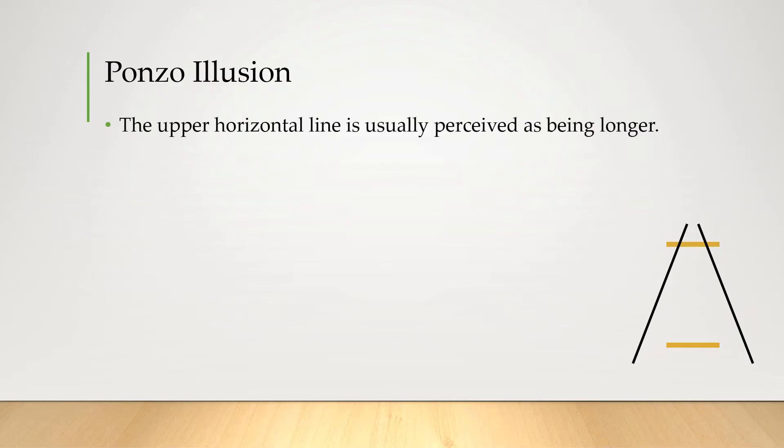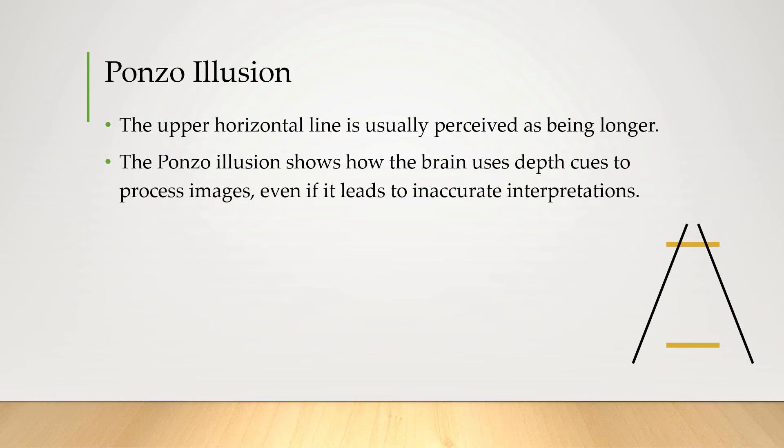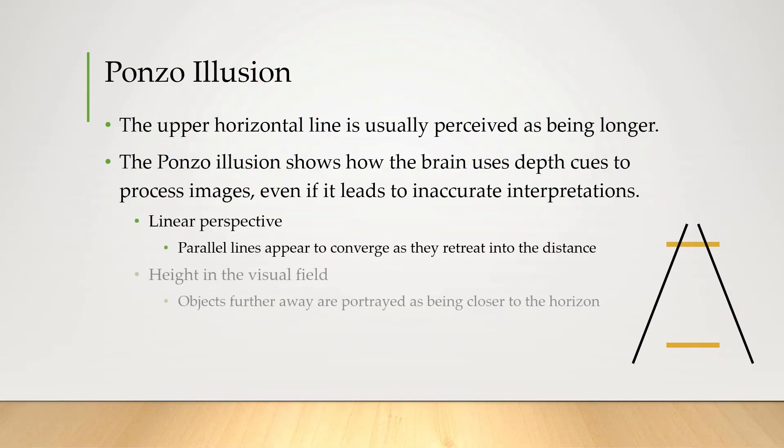This is the Ponzo illusion in which the upper horizontal line is pretty much always perceived as being longer. Why is the Ponzo illusion interesting? Well it shows how our brain uses depth cues to process images, for example linear perspective and height in the visual field, even if it leads to inaccurate interpretations. And so even if you try and fight it, your brain's thinking oh those could be converging parallel lines, and because that line's a little bit higher, closer to the horizon, it could actually just be longer than this one.